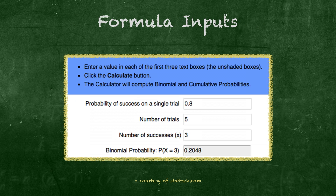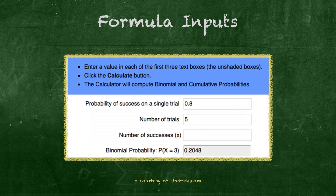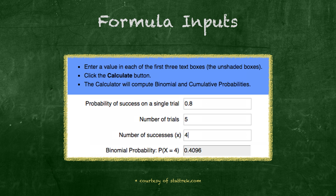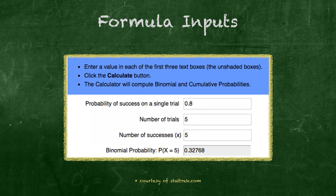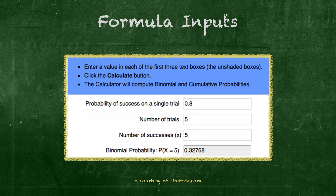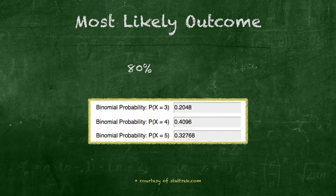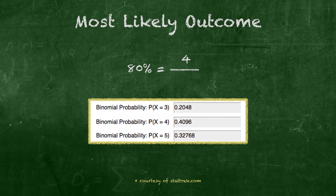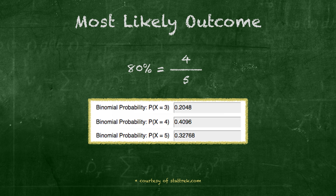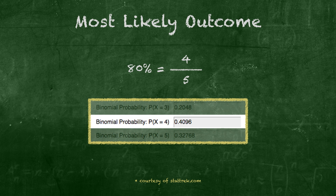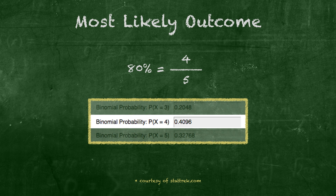Our calculations show the probability of making 3 kicks is about 20% likely, the probability of making 4 kicks is about 41% likely, and the probability of making all 5 kicks is around 33%. Remember, if the chance of making each kick is 80%, that's equivalent to 4 out of 5 kicks — so it makes sense that the most likely outcome is 4 out of 5 kicks made, which is why it has the highest probability.